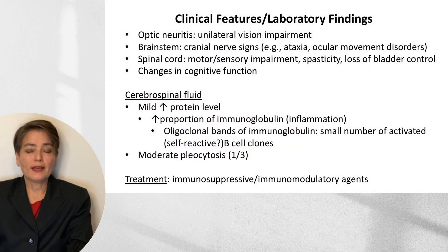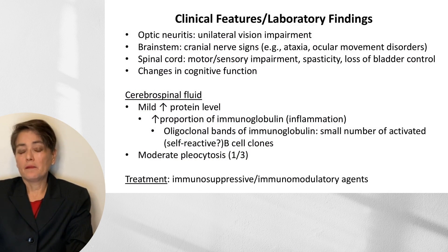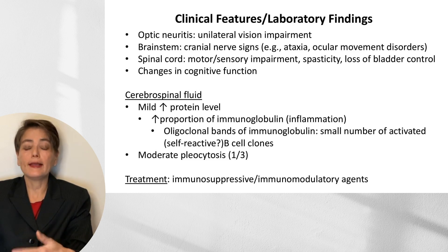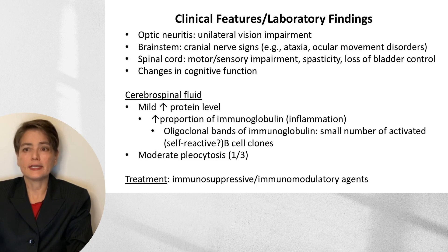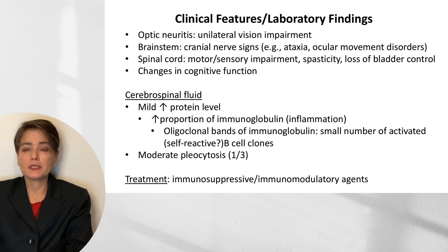The way a patient presents will depend on which region of the brain is involved. A classic presentation is optic neuritis with unilateral vision impairment. Lesions in the brainstem can present with cranial nerve signs such as ataxia or ocular movement disorders such as nystagmus. Lesions to the spinal cord can result in motor and sensory impairment, as well as spasticity and loss of bladder control. We can also see changes in cognitive function.